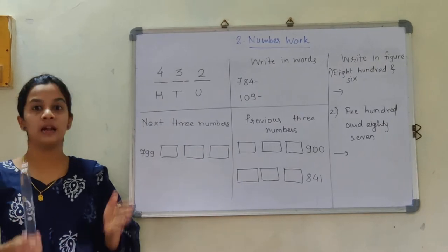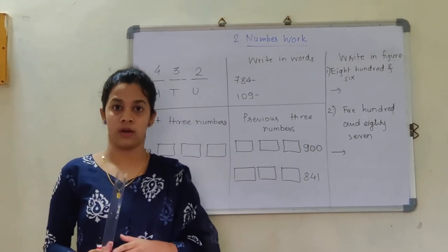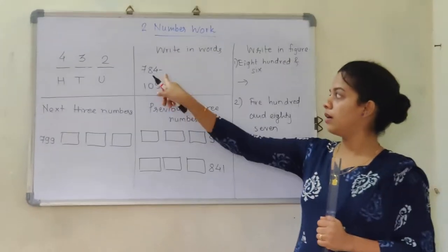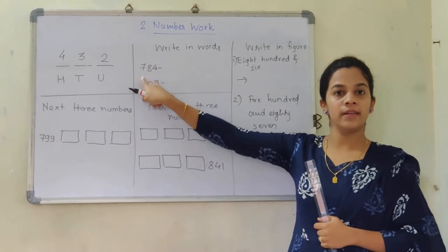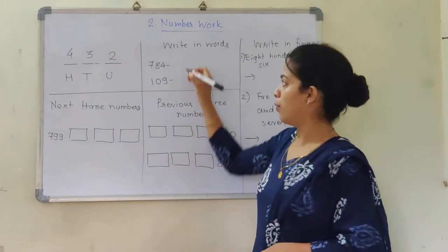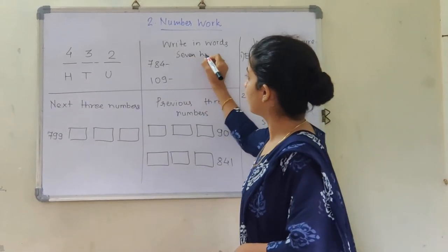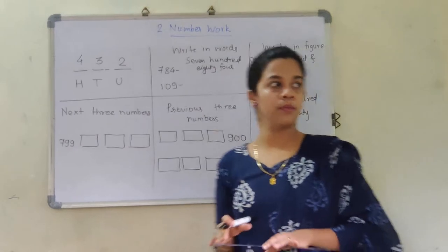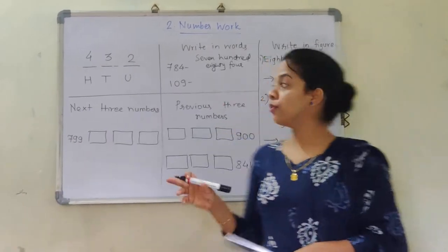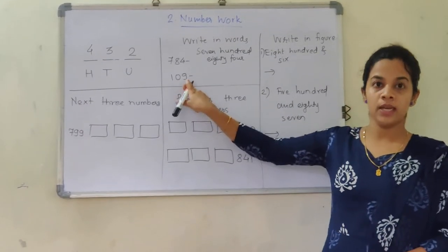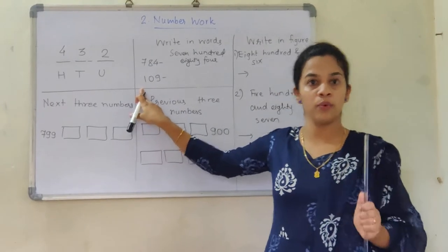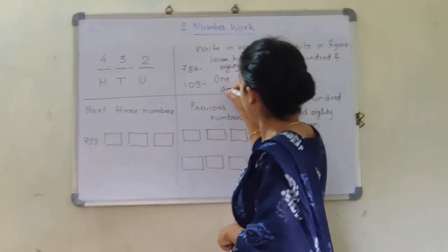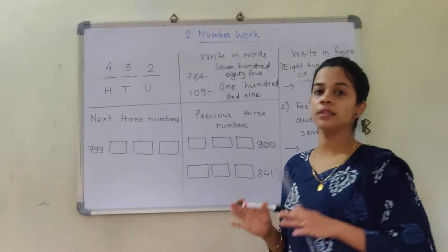Now, I have not actually started the new 4th standard number content yet — we are just revising. They have asked you to write in words. You can see here: 4 is at the units place, 8 is at the tens place, and 7 is at the hundreds place, so we write it as 780. For the next number: 9 is at the units place, 0 is at the tens place, and 1 is at the hundreds place, so we say 109.